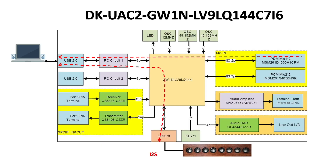This is a block diagram of the GoWin UAC2 demo board. At the heart of it is the 144-pin 9K LUT GW1N FPGA with built-in USB. It has two USB ports connected to it. Currently we are using one USB port that is connected to the PC that drives the demo. The audio from the PC is received by the FPGA via the USB port.